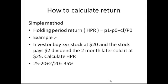For example, an investor buys XYZ stock at $20, the stock pays $2 dividend, and two months later the investor sold it at $25. To calculate HPR: 25 minus 20 plus 2 divided by 20 equals 35%.